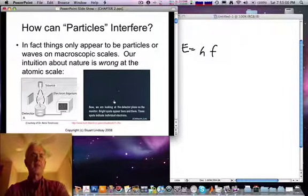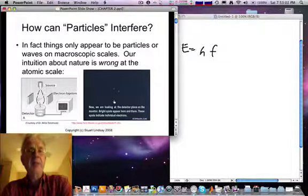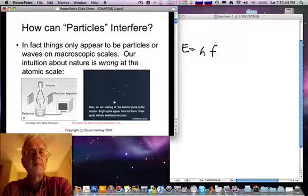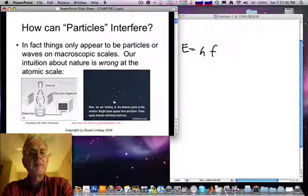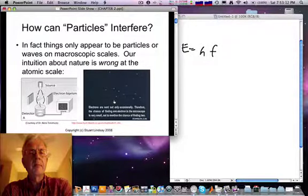And yet as you watch this, you see the interference. Bright spots appear here and there. These spots indicate individual electrons.